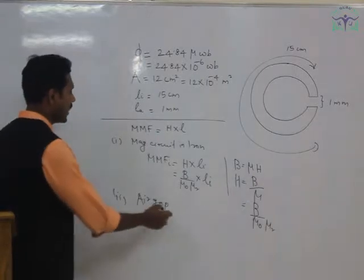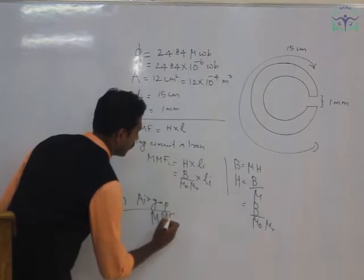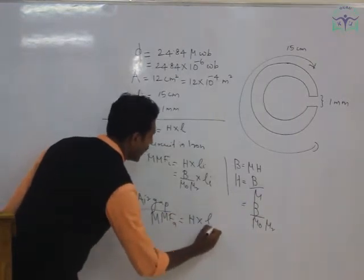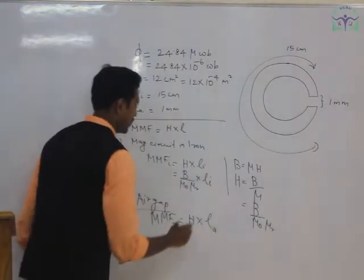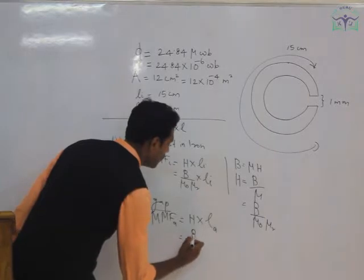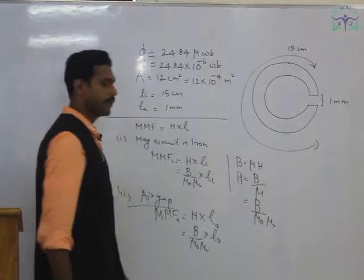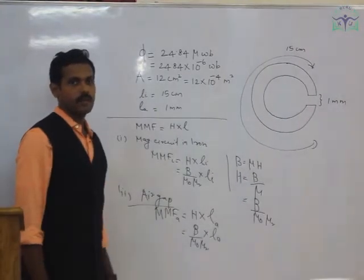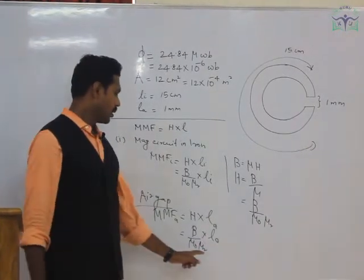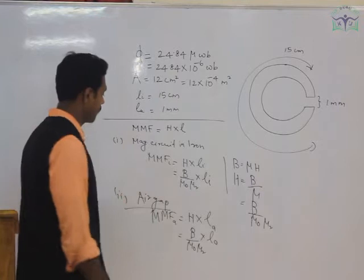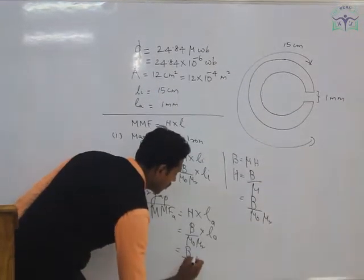When considering the air gap, the form is similar with a slight difference. MMF_air = H × Lₐ, where Lₐ is the length of the air gap. Using the same relation H = B / (µ₀µᵣ) × Lₐ. Here, an important fact: it is an air gap, so the relative permeability µᵣ = 1. Therefore, MMF_air = B / µ₀ × Lₐ.